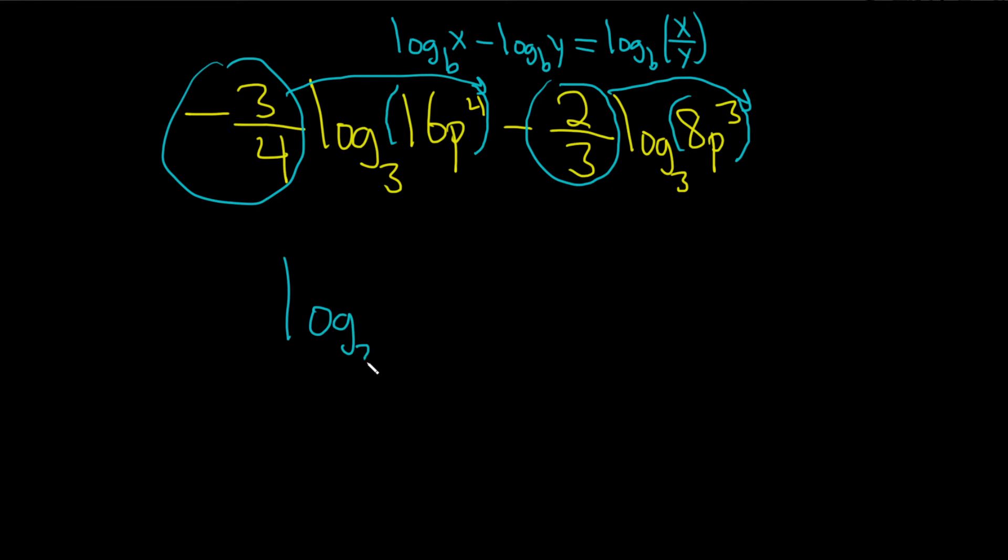So this is the log base 3, that's why the parentheses are important, so you can actually write that 16p to the fourth to the negative three-fourths, and then minus log base 3 of 8p cubed, and this will be two-thirds.